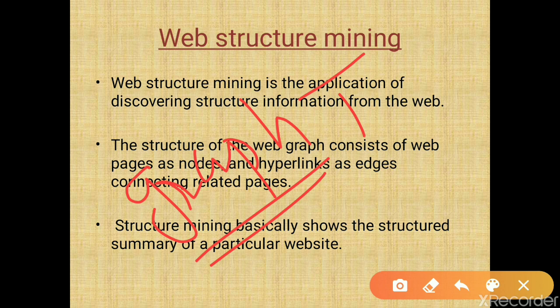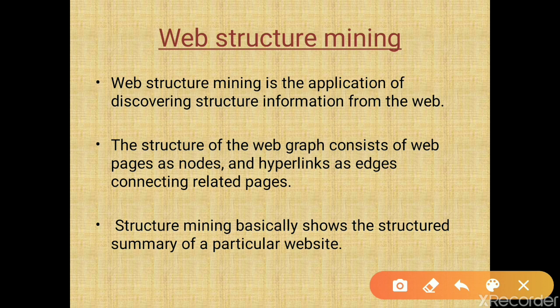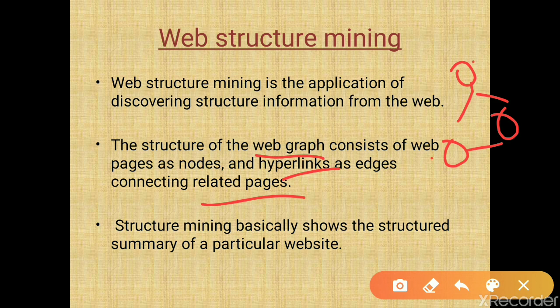To find the web structure, we represent it using a web graph. A web page contains web pages and navigating hyperlinks, and we use graph theory to represent this web graph. In the web graph, nodes are web pages and hyperlinks are the directed edges connecting related pages. Pages are represented as nodes, and navigation from one to another is shown using directed edges representing hyperlinks.